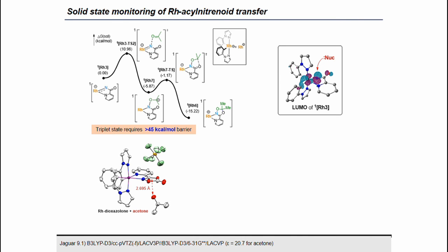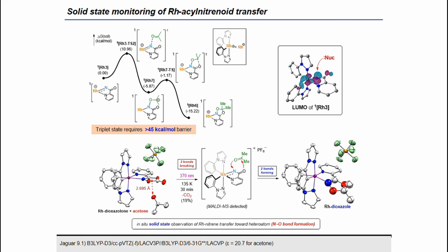Based on this observation, we were next curious whether we could monitor this solution-phase nitrogen transfer reactivity in the solid state. Fortunately, we were able to prepare a rhodium dioxazolone sample co-crystallized with an external acetone molecule. In this crystal structure, the distance between the acetone molecule and the centroid of the dioxazolone ring was 2.695 Å. When this co-crystal was subjected to the X-ray photocrystallographic experiment, we were able to monitor the formation of the corresponding rhodium dioxazolyl product in 19% yield at 135 K with 317 nm irradiation. Such monitoring of reaction progress in the crystalline matrix is additional compelling evidence validating rhodium acyl nitranoid intermediacy in nitranoid transfer reactions.